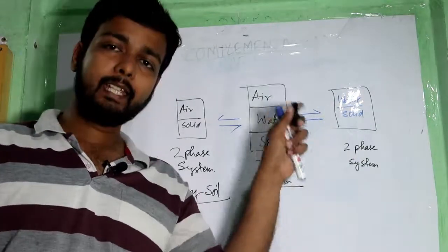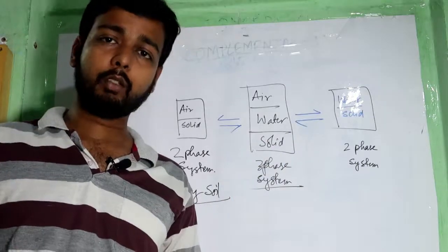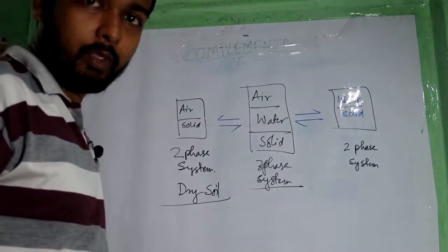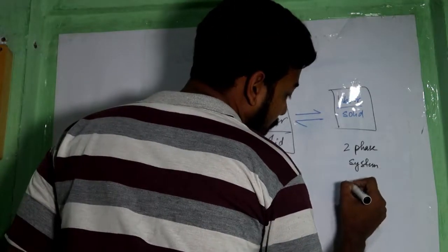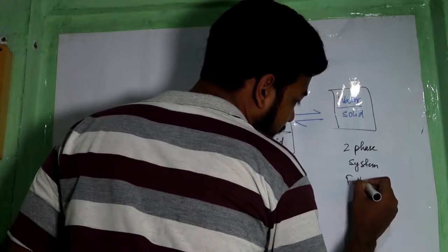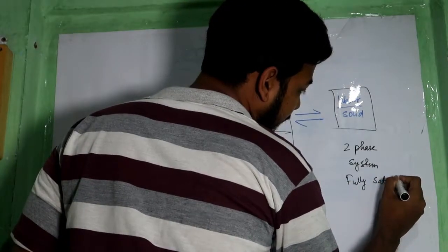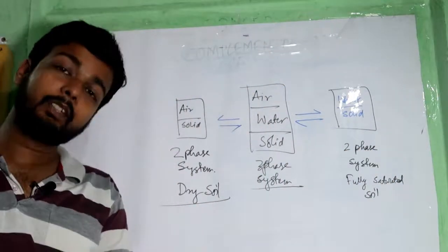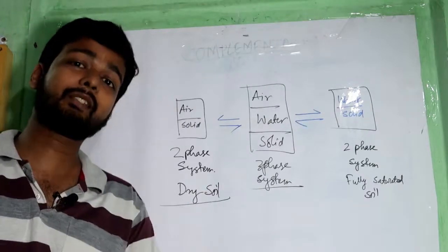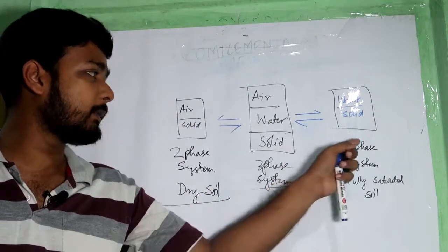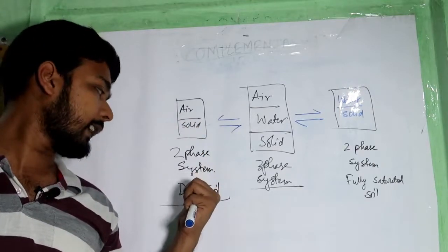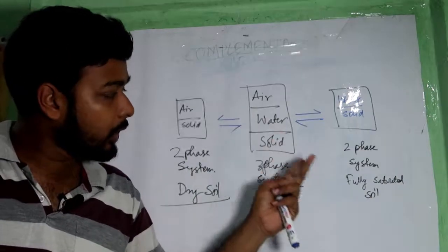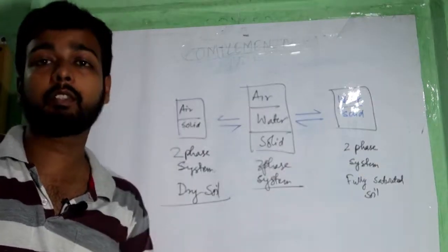And here, is there air? No — it is full of water. So this is the wet condition. You can say wet soil, but the proper term is fully saturated soil. Basically, soil is three-phase — that is universally true. But in some cases, soil is two-phase: when soil is dry, it is an air-solid combination; when it is a water-solid condition, it is fully saturated soil.